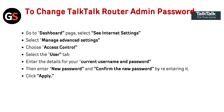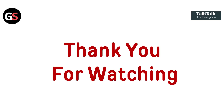To change the TalkTalk router admin password, go to the Dashboard page, select See Internet Settings, then select Manage Advanced Settings. Choose Access Control, select the User tab, and enter the details for your current username and password. Then enter the new password and confirm it by re-entering it, and click Apply.